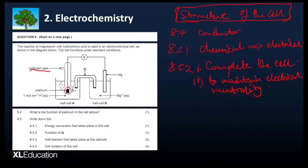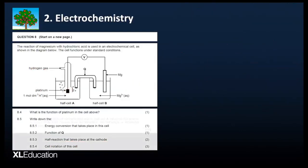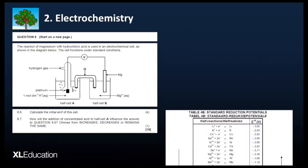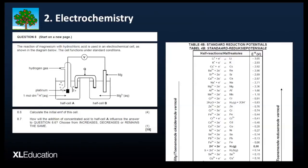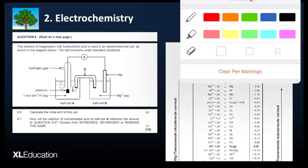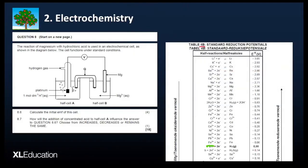Those are the low-hanging fruits. Next: the half-reaction that takes place at the cathode. 8.5.4 is the cell notation. For the half-reaction at the cathode, you can easily get it because you need to identify your anode and your cathode. We identify them from the standard reduction potential table, Table 4b. From Table 4b, we have two equations — one for hydrogen and one for magnesium.